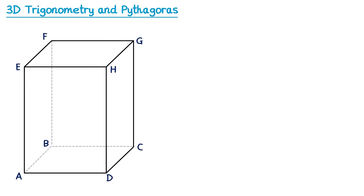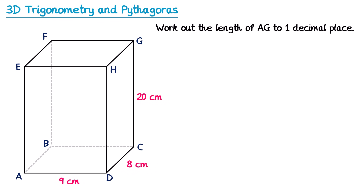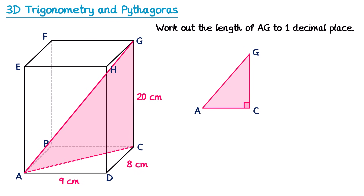If we add some lengths to this cuboid, we're going to try and find the length of AG to one decimal place. AG is this line here — notice it isn't on one of the faces of the cuboid, it goes through the shape. To find the right-angled triangle for this one, we connect from A to C as well. The triangle ACG goes through the shape with the right angle at C. We know CG is 20 cm, but that's actually all the information we know, so we need to find the length AC first.